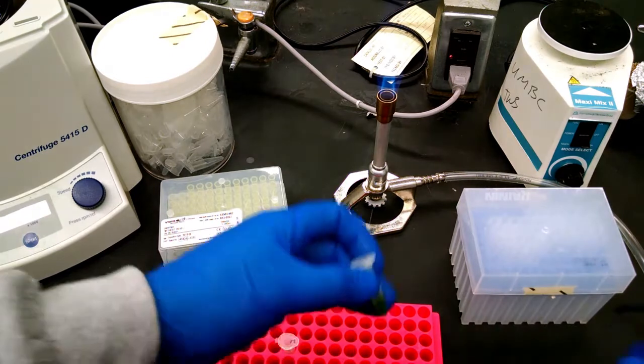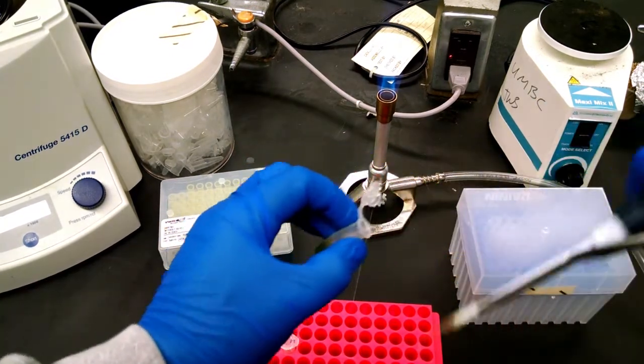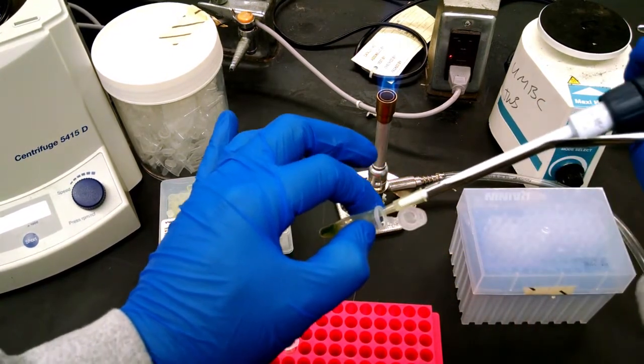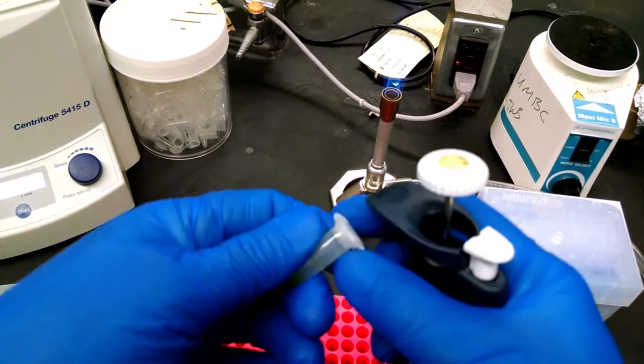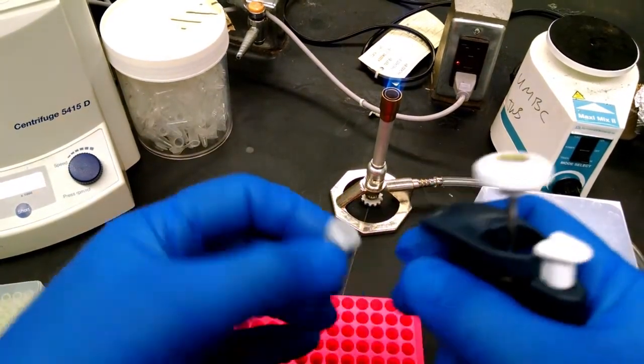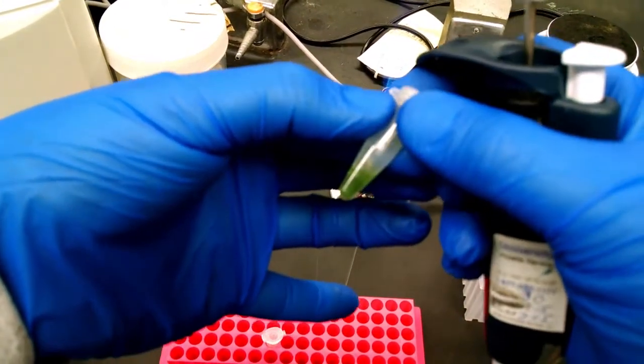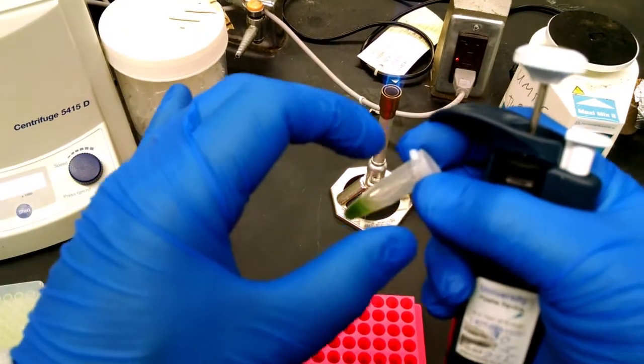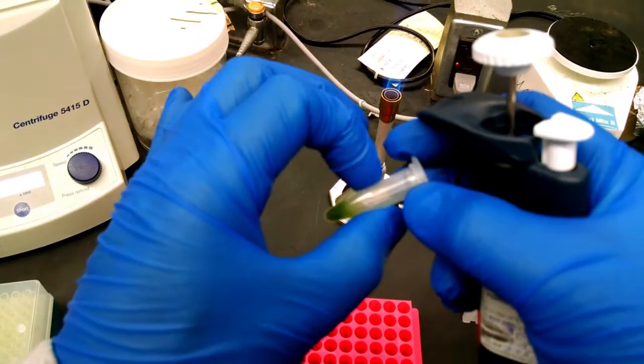So let's do that. After the quick spin, that'll be very easy. So after the quick spin, adding the 50 microliters to the Instagene is going to be very easy.